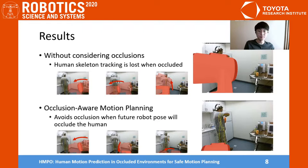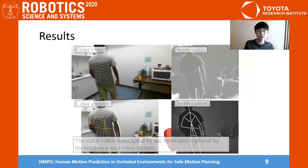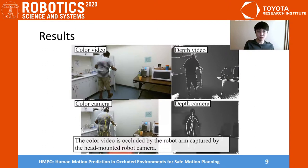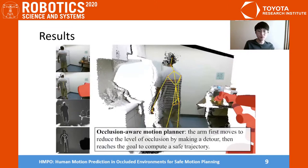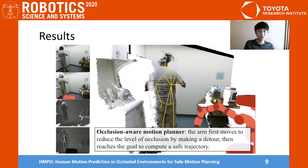This is a simulation video with a 7-degree-of-freedom Fetch robot arm and a head-mounted RGBD robot camera. The color video is captured by the head-mounted robot camera and shows the view being occluded by the robot arm. With the occlusion-aware motion planner, the arm first moves to reduce the level of occlusion by making a detour.